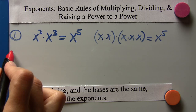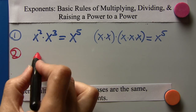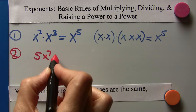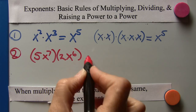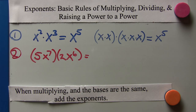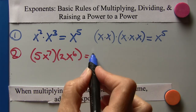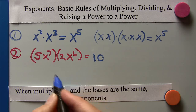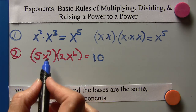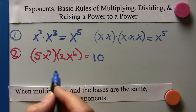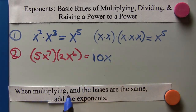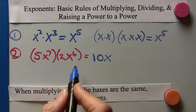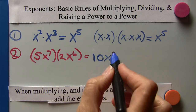Taking another example: 5x to the seventh times 2x to the sixth. We're multiplying two monomials, so we deal with the coefficients first — 5 times 2 is 10. Now we have x in both terms; the first has an exponent of 7 and the second has an exponent of 6. The bases are the same, so we add the exponents: 7 plus 6 is 13. The answer is 10x to the thirteenth.